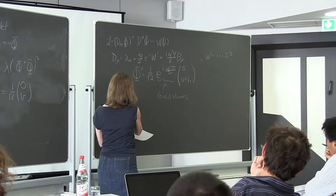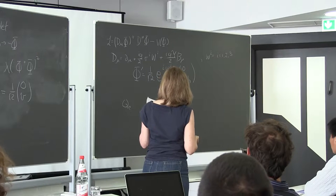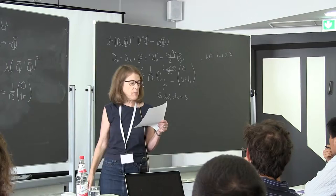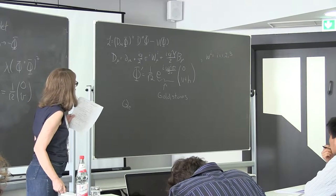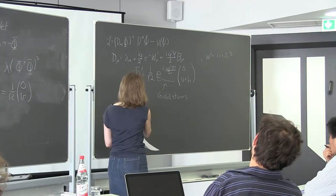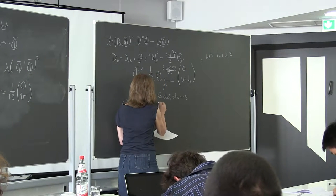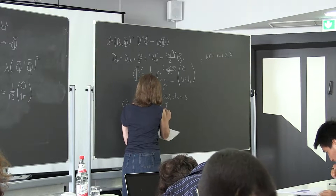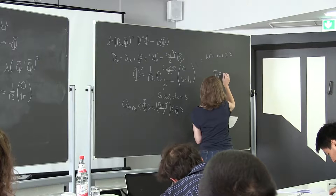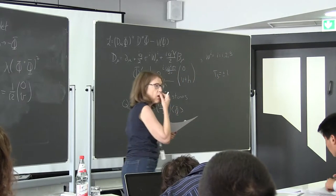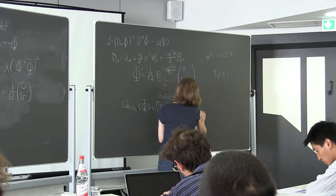The electromagnetic charge Q acting on φ equals T₃ + Y/2 times φ. My normalization is T₃ = ±1/2. This says that Y = 1 for the Higgs doublet. The important point is that this vacuum expectation value doesn't break electromagnetism — electromagnetism is conserved.